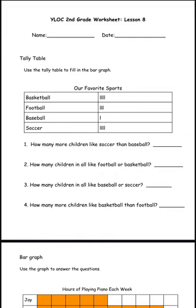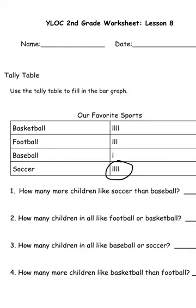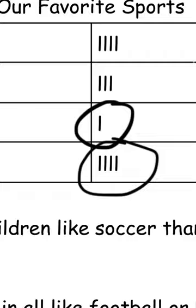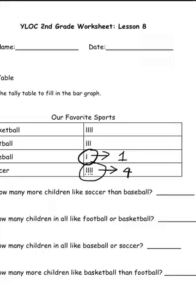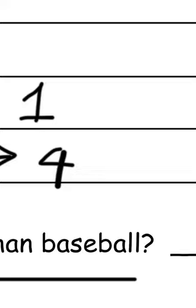Number 1 says, how many more children like soccer than baseball? If you look at it, soccer and baseball are shown. For soccer, we have 4 people because there are 4 lines — 1, 2, 3, 4. For baseball, we only have 1. How many more children like soccer than baseball? We have to subtract: 4 minus 1 is 3. So 3 is the answer for number 1.